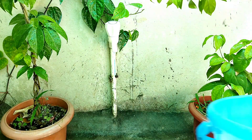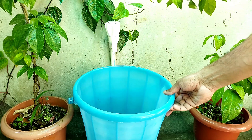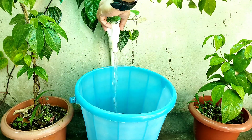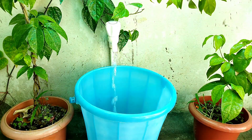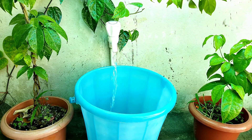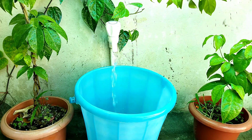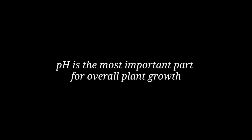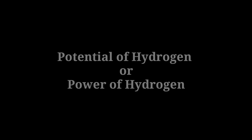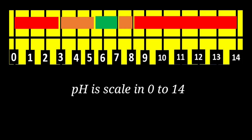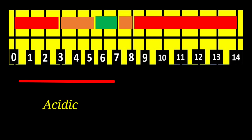Most commonly we all use tap water for watering our plants, and if we are living in urban areas then there is no choice but to use it. When we use tap water regularly, it stops our plants from reaching their full potential of growth. The scientific reason behind this is related to pH variation. pH is the most important factor for overall plant growth and its full form is 'potential of hydrogen' or 'power of hydrogen.' pH is scaled in the range of 0 to 14 and is divided into two categories: acidic or alkaline.